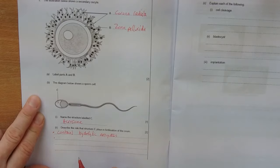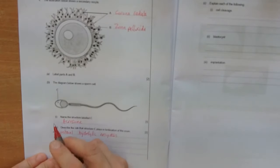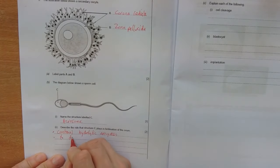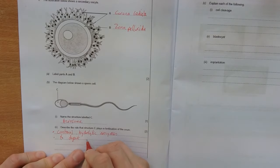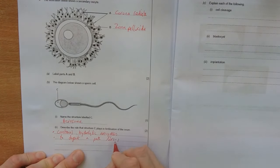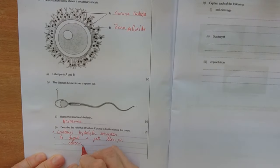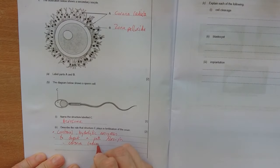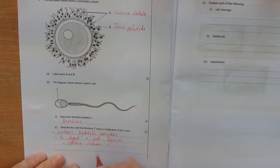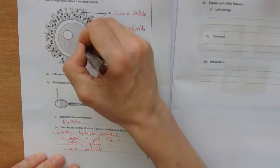And what are these going to do for the second mark? These are going to digest the corona radiata and the zona pellucida. To digest the path through the corona radiata and the zona pellucida. And then we can have fertilization.